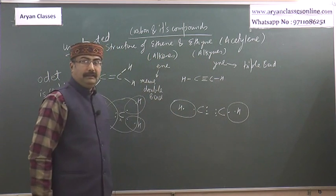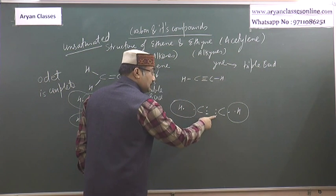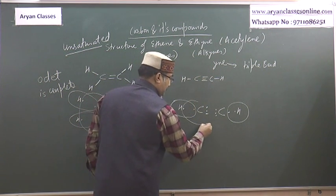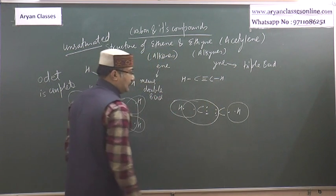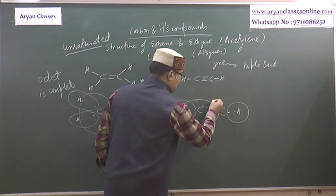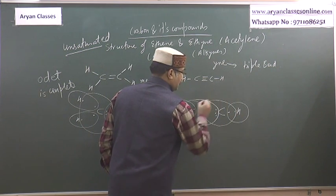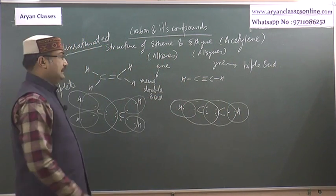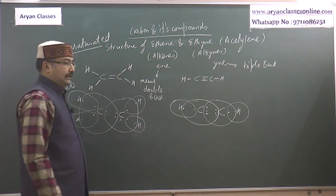Hydrogen ka octet complete ho gaya hai. Now is carbon ke paas teen aur ek aath electrons hain. Yeh carbon ne pehle wale left wale carbon ne share ki hai, aur yeh right wale carbon ne share kiya. Inka bhi octet complete ho gaya. So these are the structures of ethyne and ethene.